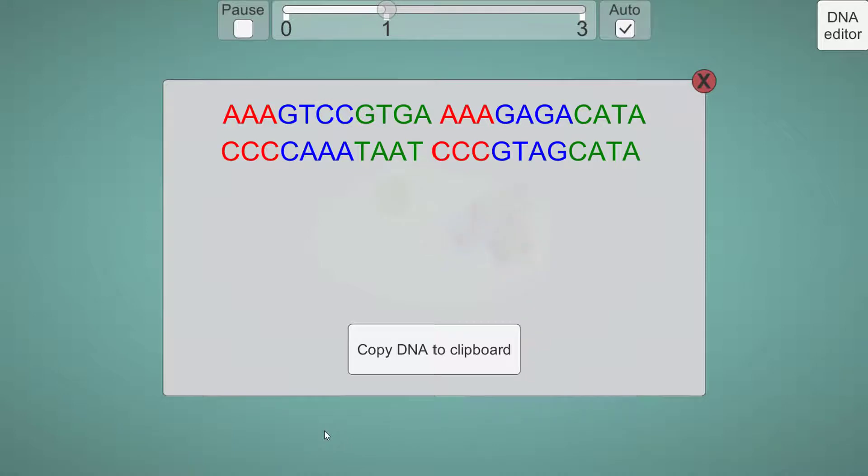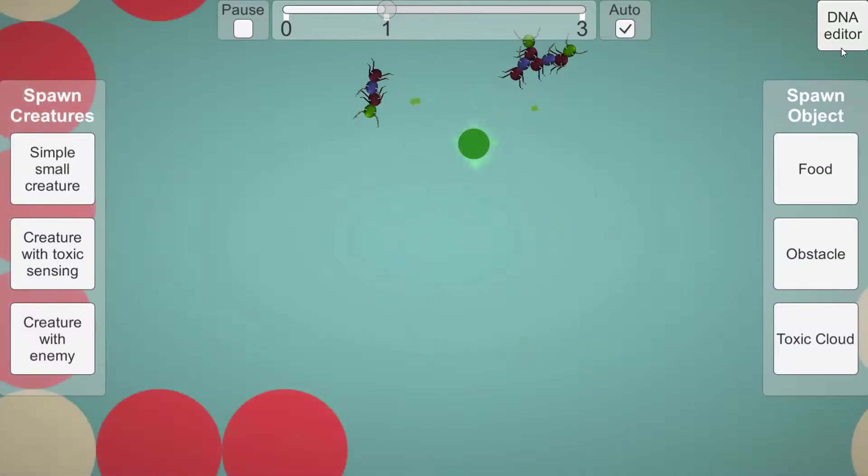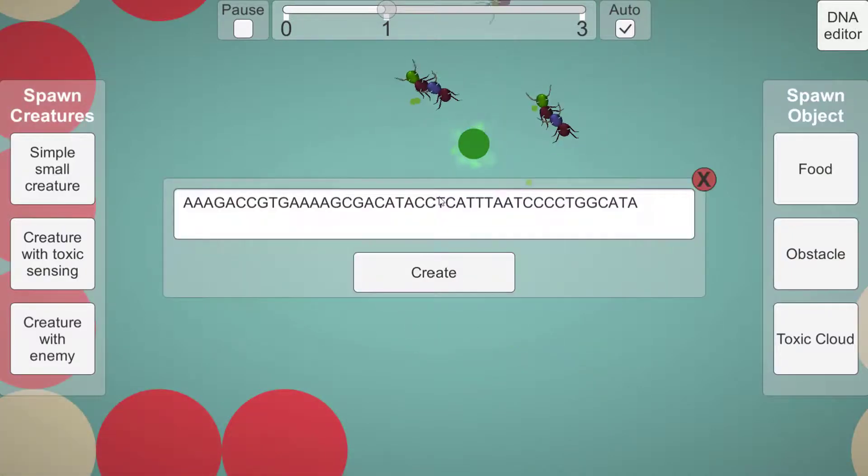When showing the DNA, the player can copy it to try to understand it or modify it. Let's modify the DNA a bit. The player can use the DNA editor to spawn new creatures with custom DNA. Let's modify it a bit and then spawn it.